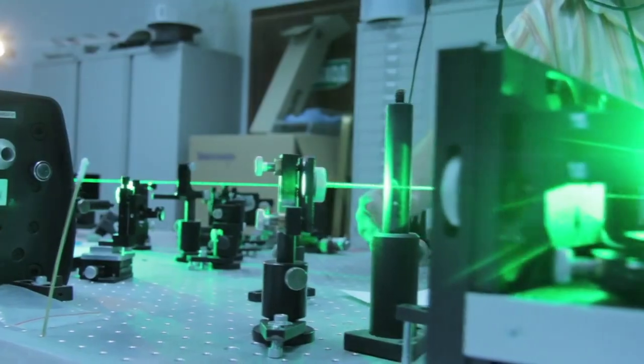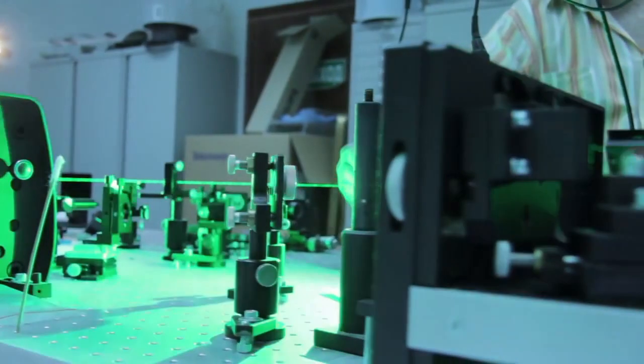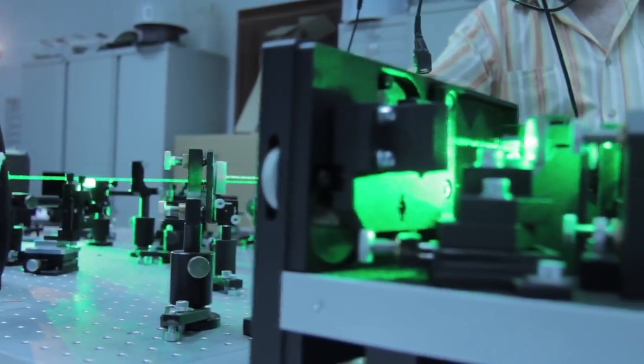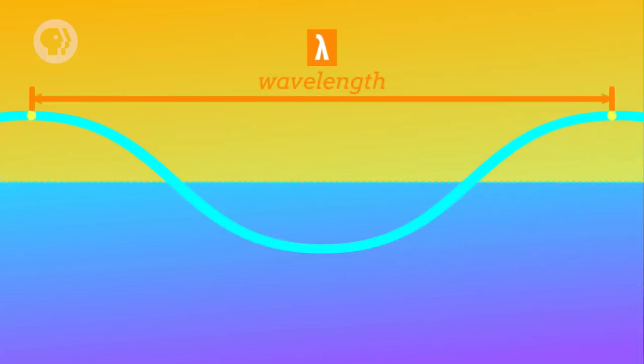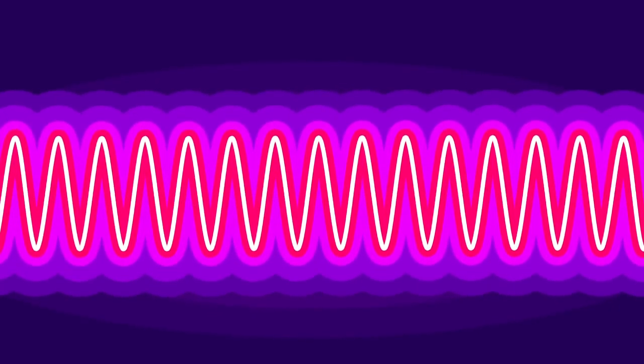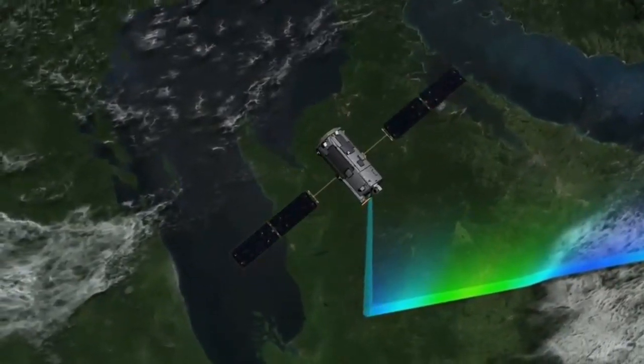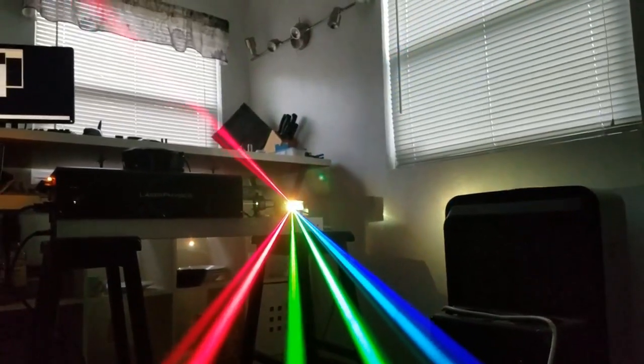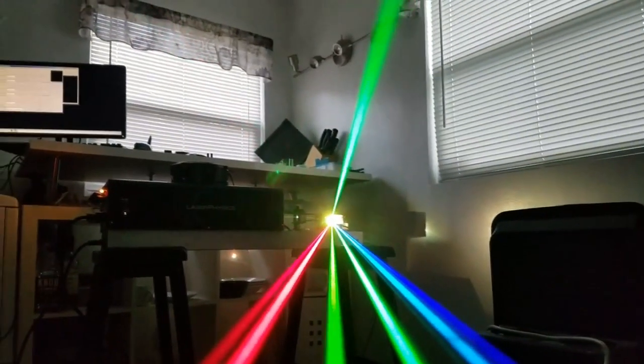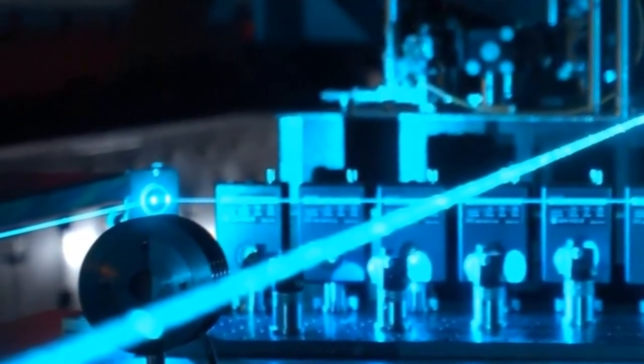One of the most important laser parameters is the generated radiation wavelength. The laser application field depends on the laser wavelength. Lasers are used in various fields such as medicine, security and monitoring systems. Why does a laser have this or that wavelength parameter? To understand that, you need to refer to the physics of the radiation process.